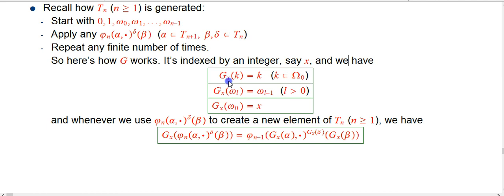So G sub x of just an integer just spits back that integer. So if you collapse something that's already at the bottom of the hierarchy, you don't do anything to it, and it's totally independent of the x.